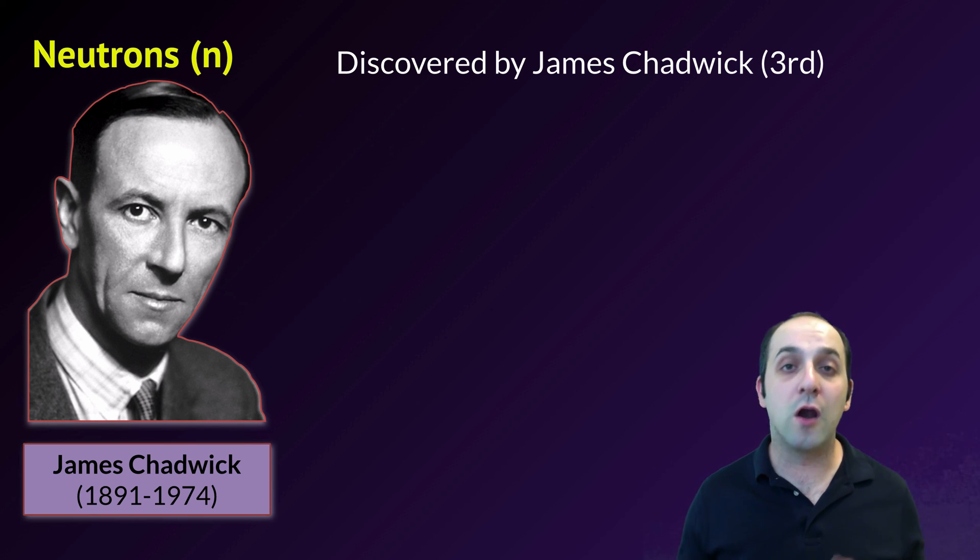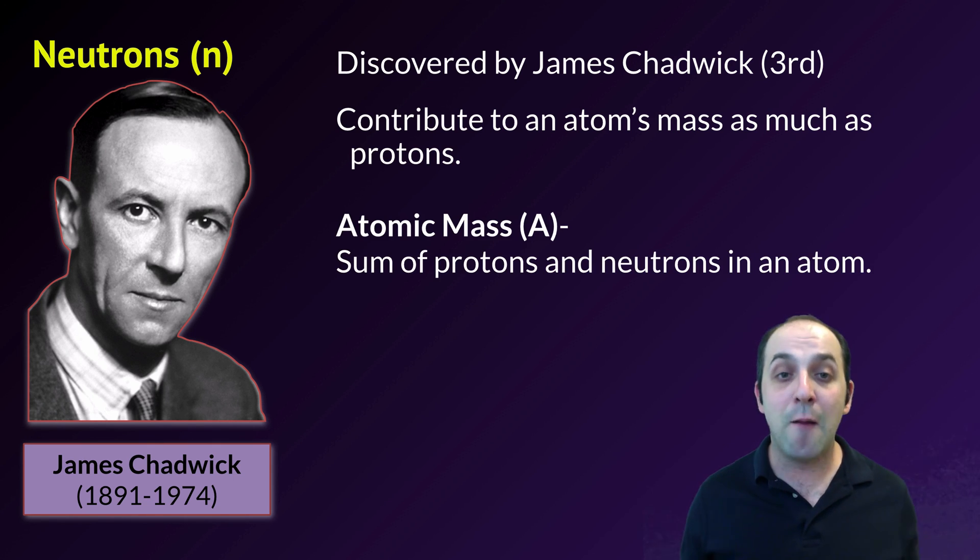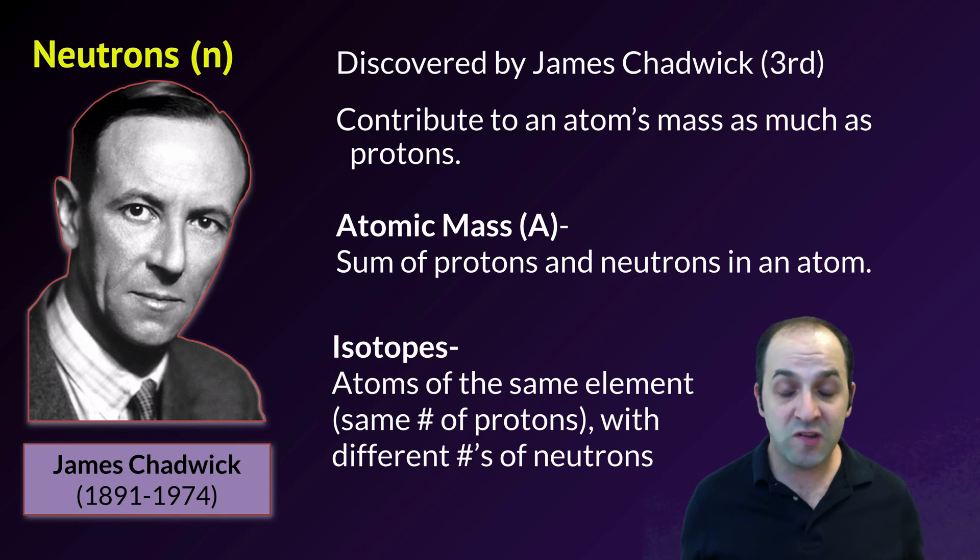Last but certainly not least are the neutrons, only put here last because they were discovered last by James Chadwick in the 1940s. Neutrons are pretty cool. They contribute to an atom's mass as much as protons too and they're found in the nucleus of the atom, but they do not have any charge at all. When we figure out the mass of individual atoms, we have to do that by summing the total number of protons and neutrons in that atomic nucleus. Unlike protons, atoms of the same element can have different numbers of neutrons. These are what we call isotopes, just atoms of the same element with the same number of protons or the same atomic number, but they have different numbers of neutrons.